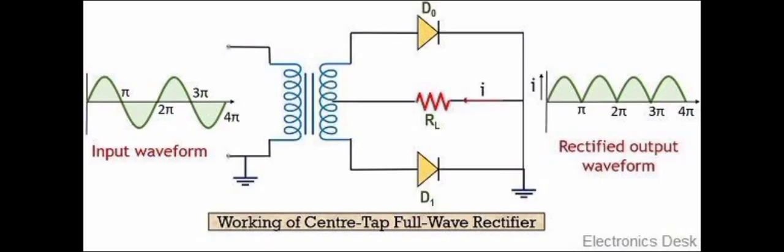This is full wave rectifier. There is a step down transformer. It is used to step down the AC voltage. In full wave rectifier we use two diodes. The top diode is used to convert the positive cycle, and the bottom diode is used to convert the negative cycle.